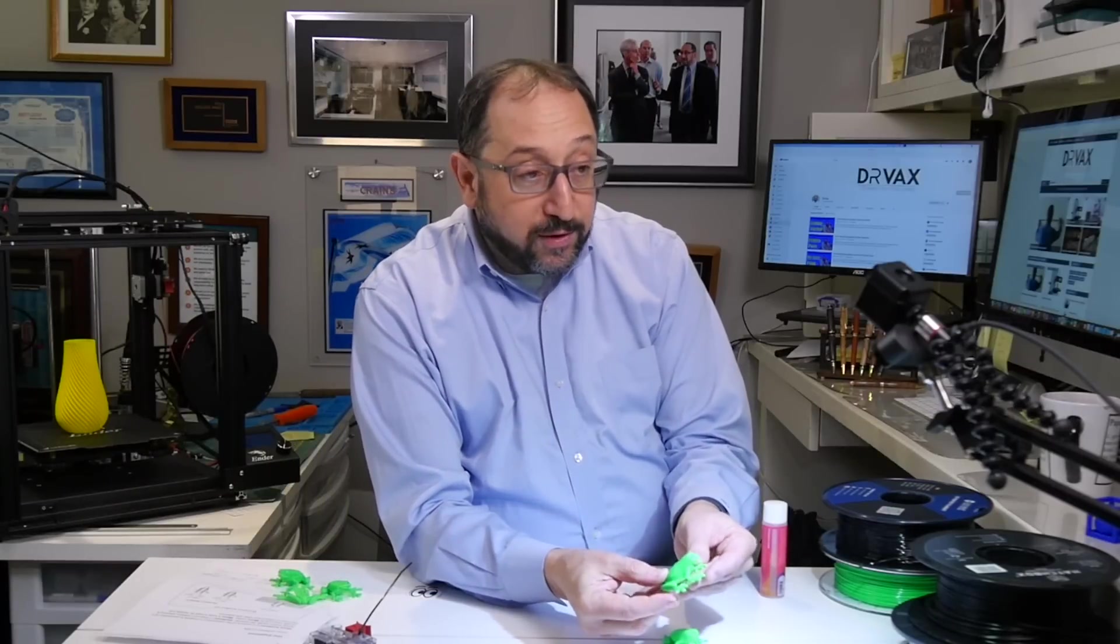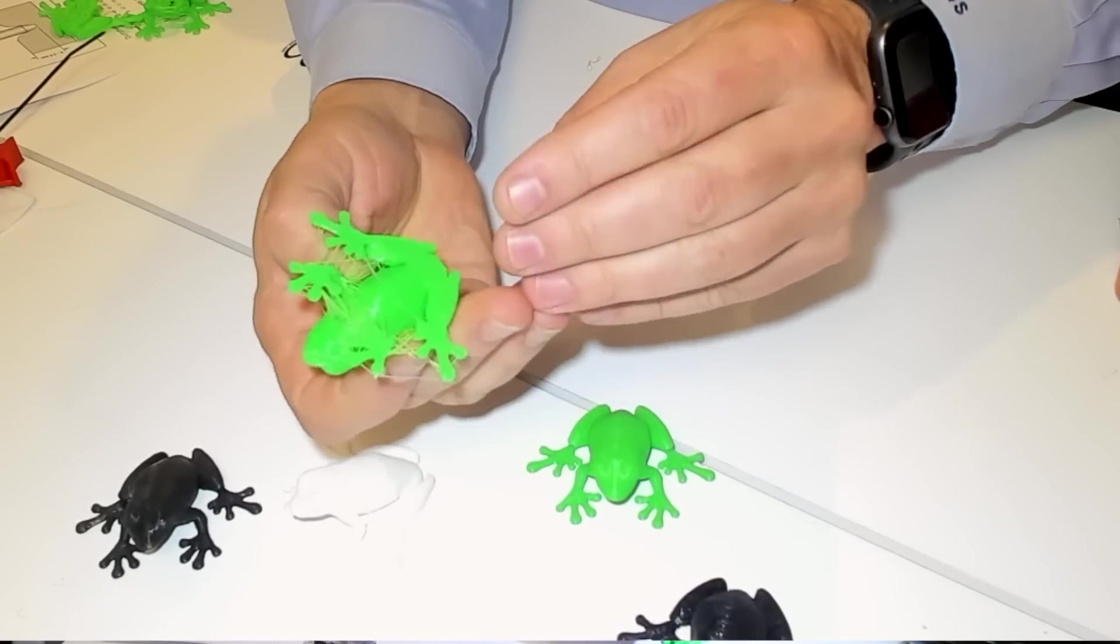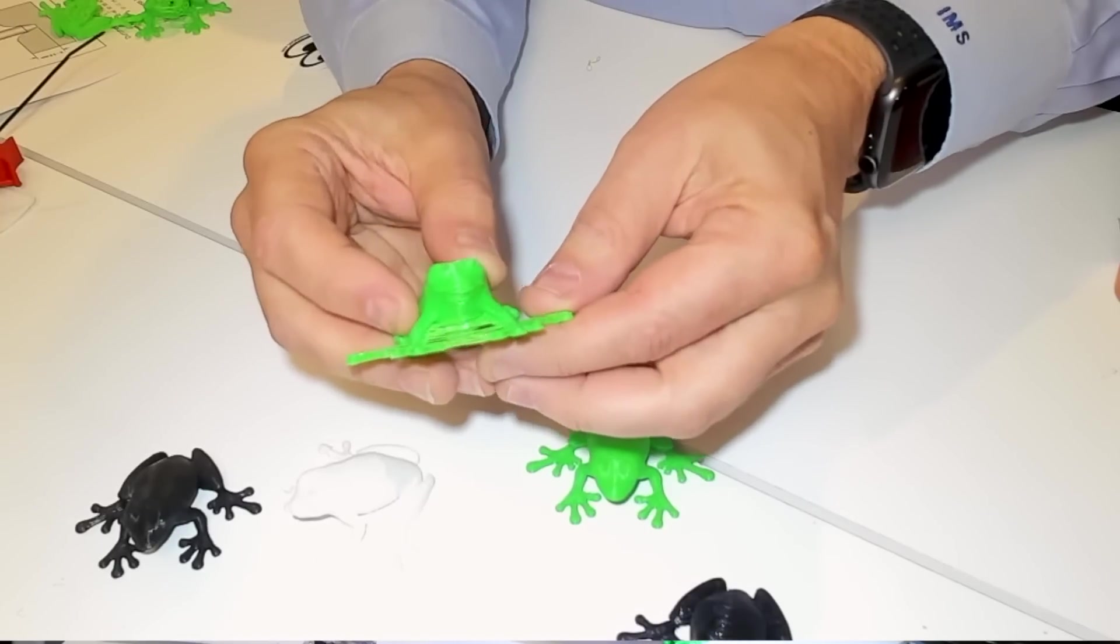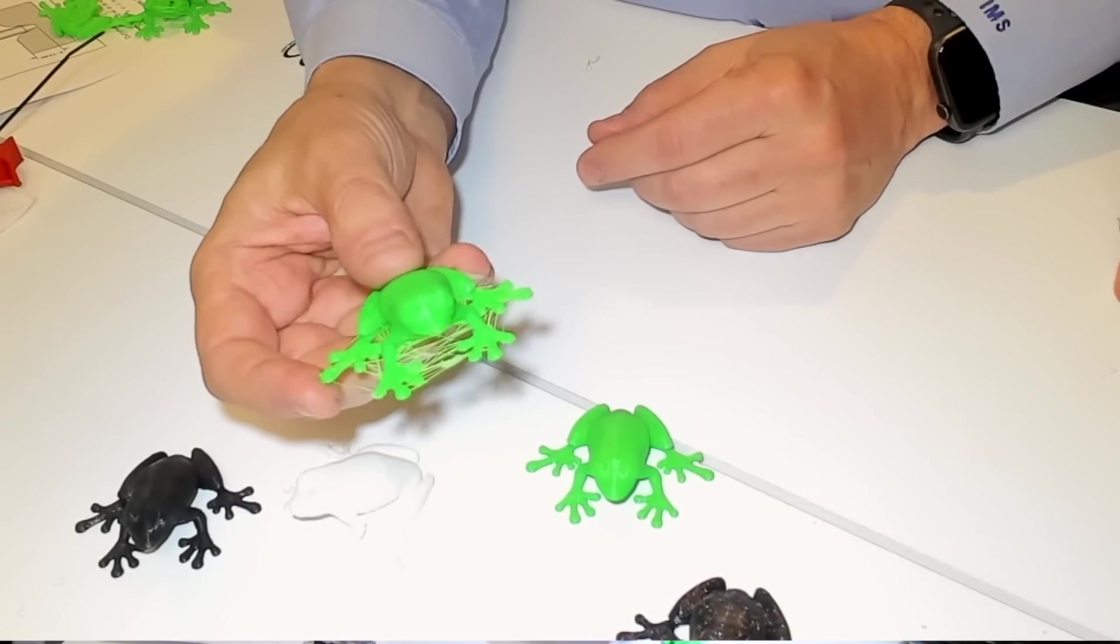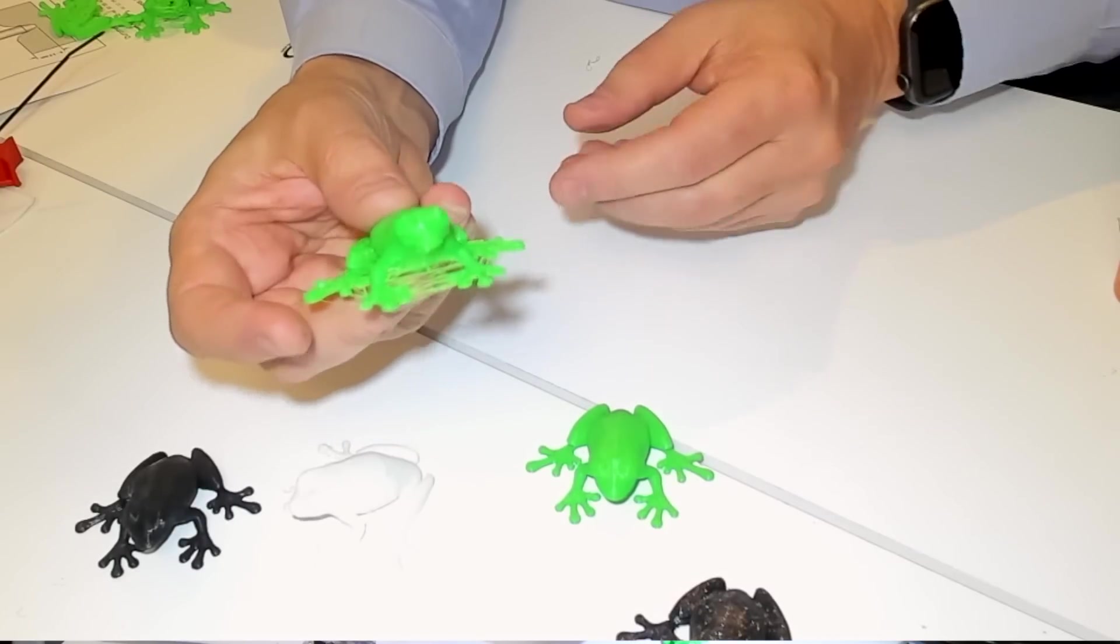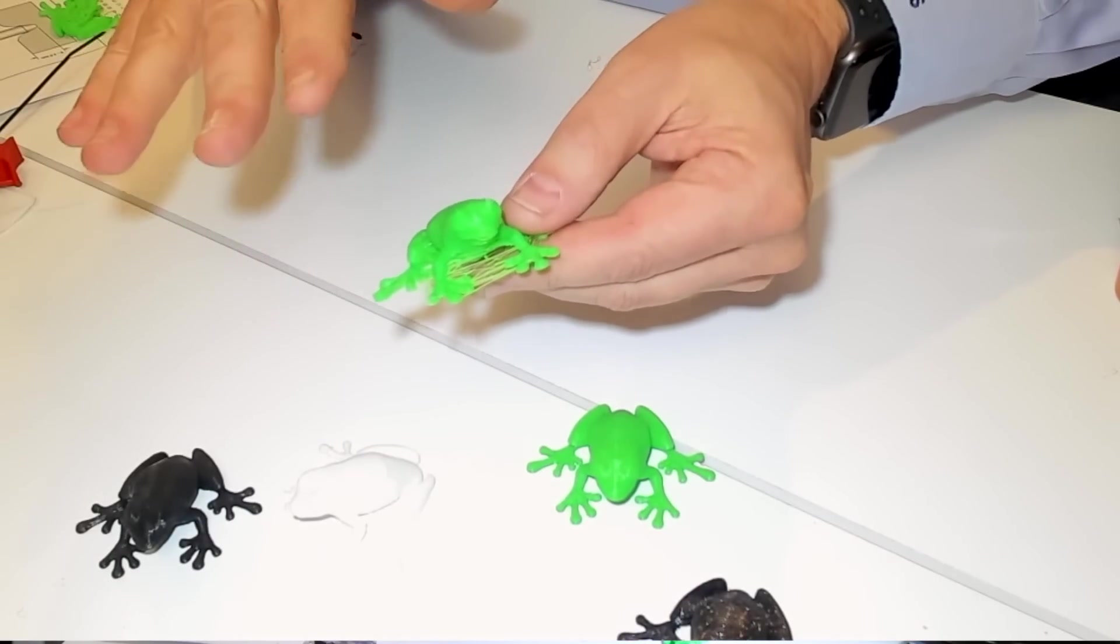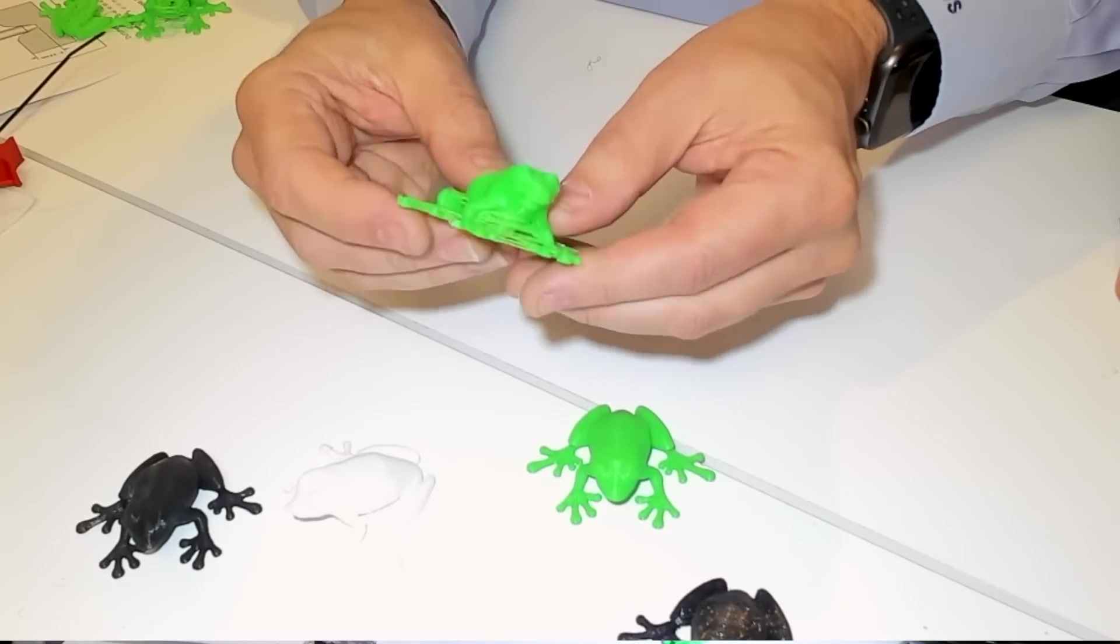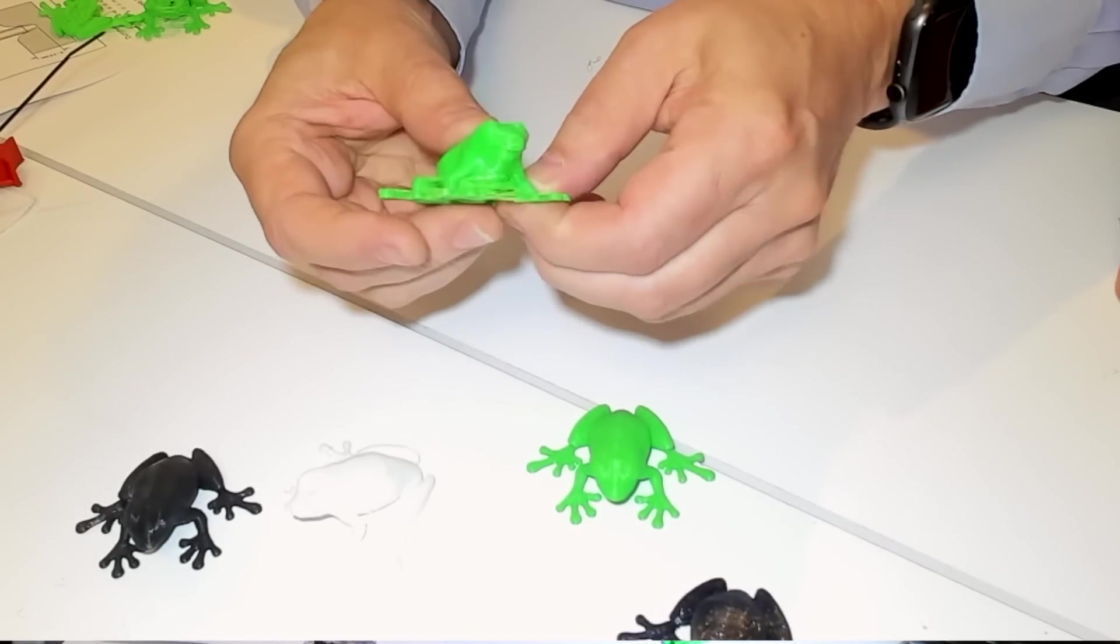So I put in place a CME CNC extruder. The initial results, as you can see here, were just okay. There was a lot of stringing here. I had retraction completely off. I was printing at about 230 degrees centigrade on the standard bed with magic goo on the bed on the Ender 5. And it did extrude properly, but the stringing was pretty dramatic.